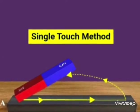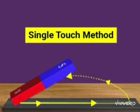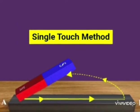If we stroke an iron bar with one end of a bar magnet repeatedly in the same direction, the iron bar becomes a magnet.